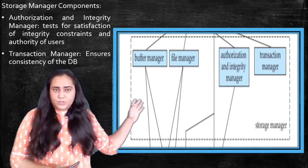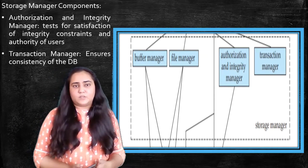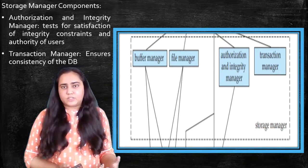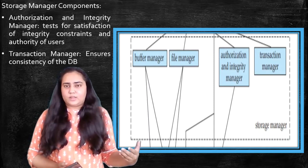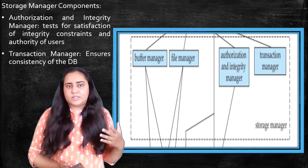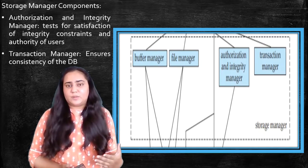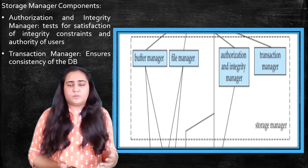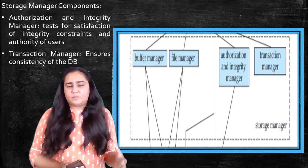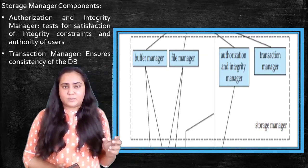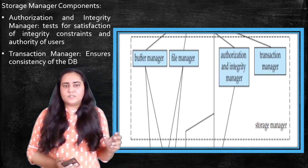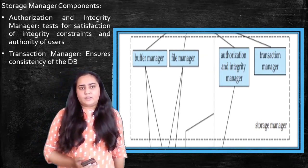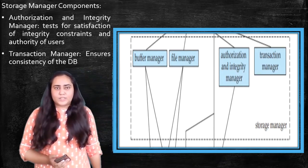Next we have transaction manager, which you can see at the far end of the storage manager. A transaction manager ensures consistency of the database. Consistency means correctness of data, and later on in the next chapters you will study that consistency of the database is affected by a lot of things, not just wrong data being entered. It is affected because of concurrency where people are trying to do so many things at the same time to the database. This is handled by the transaction manager.